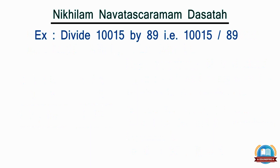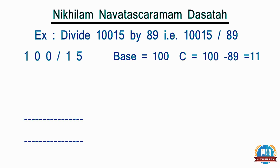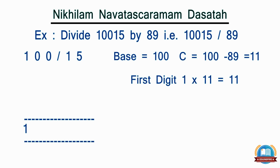Another example with a higher divisor: let's divide 10015 by 89. Here the base is 100 and the complement becomes 100 minus 89, that is 11. The high-level steps remain the same and we will see how to use the complement. First, split the number. As the base is 100, we will put a slash after 2 digits from the right. We take down the first digit as it is under the horizontal line. Now multiply the first digit with the complement: 1 into 11, which becomes 11, and put this under the second and third digits.